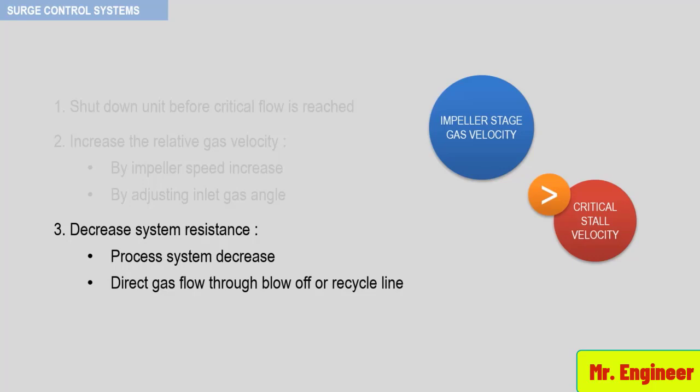Of the two alternatives available, the recycle line is more efficient, since it does not affect the energy in the process system. Given the applications in which compressors are employed, it can be readily observed that option 3 is the most cost-effective way to protect compressors against surge and corresponding mechanical damage.